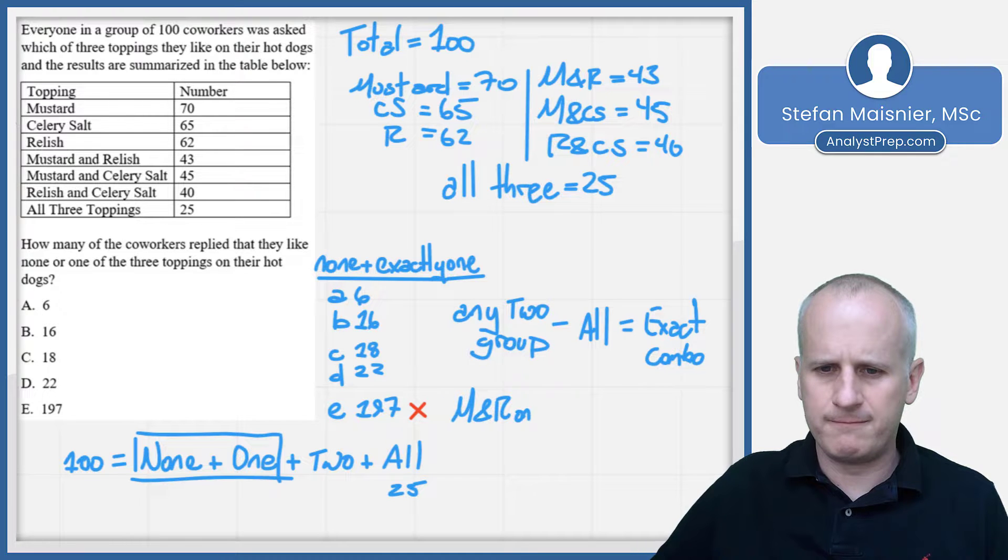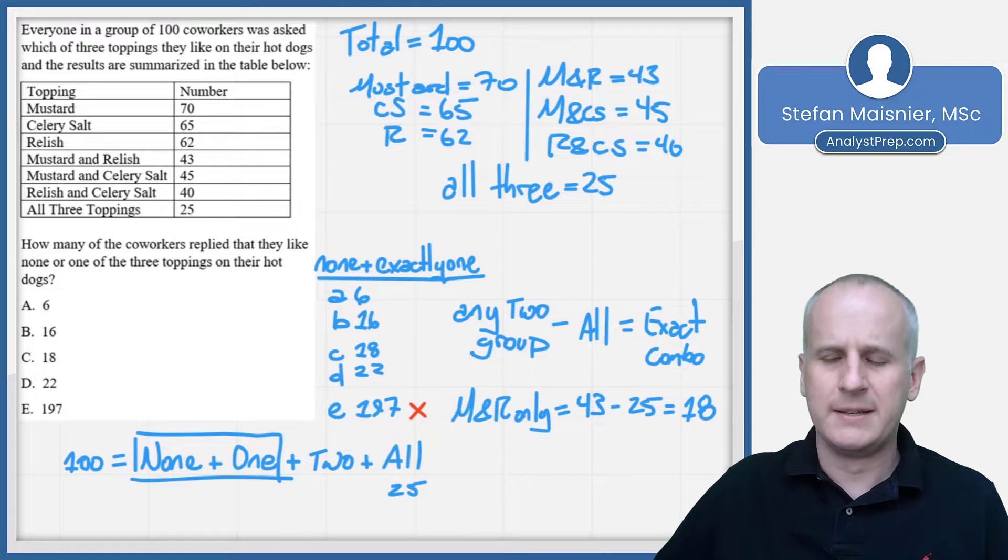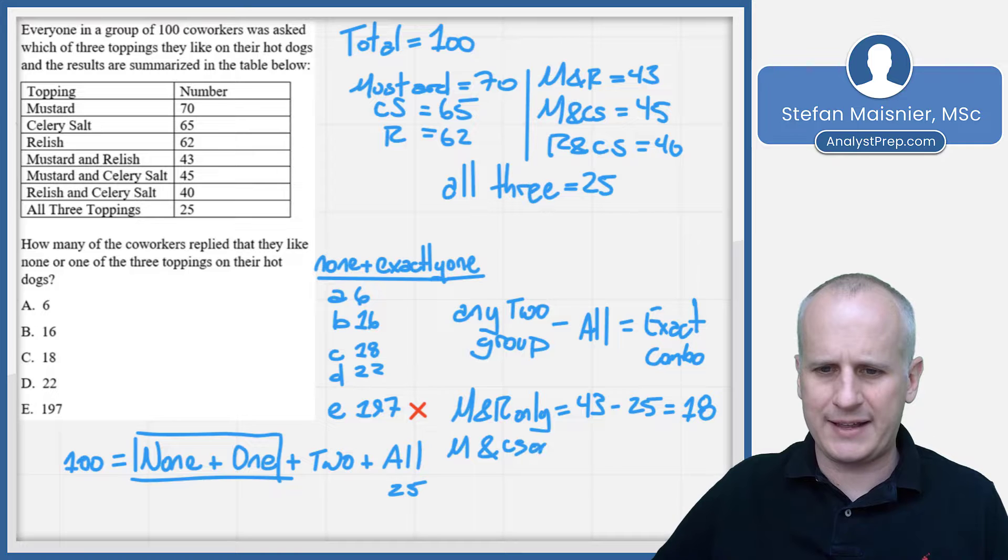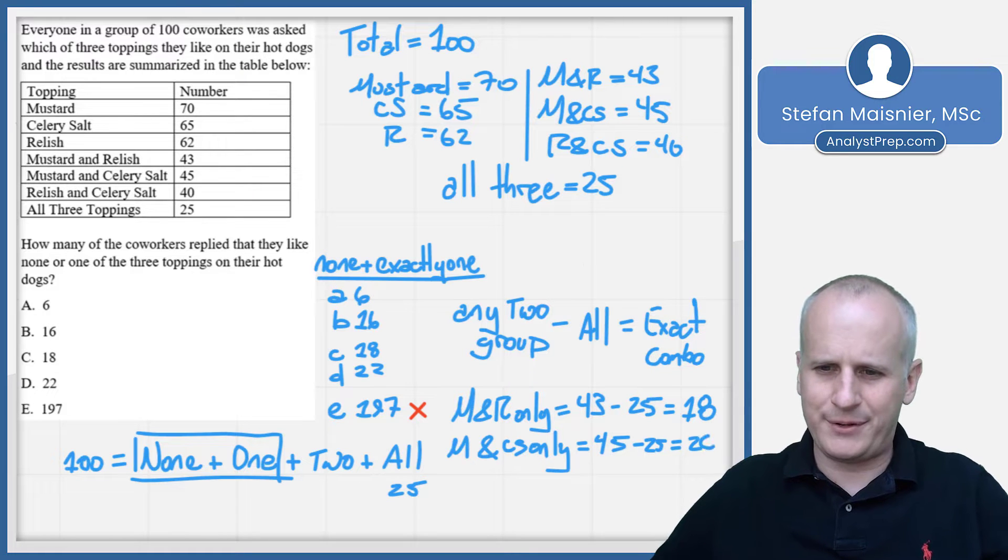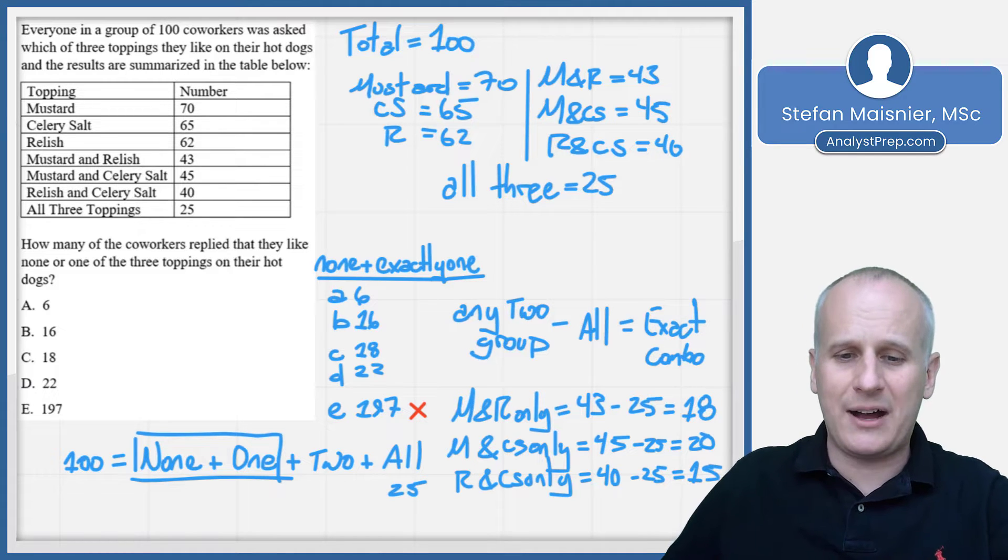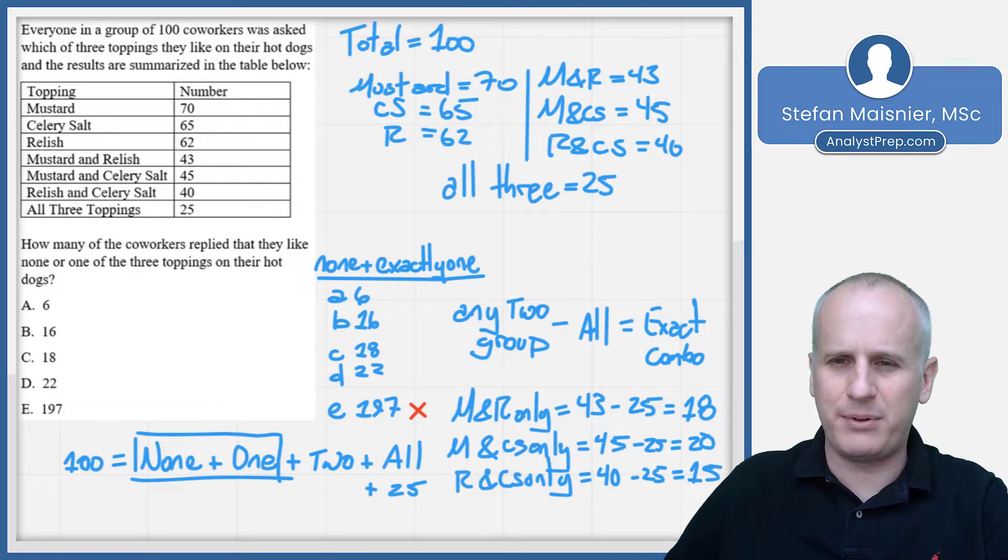So that means when we're looking at M and R, we can do M and R only as being equal to 43 minus 25, which is equal to 18. Because we know that if you like M and R, you could have some that like all three. And so that's our M and R only. Then we've got our M and celery salt only, that exact combination. That's equal to 45 minus 25, which is 20. And then we've got our R and CS only. That's equal to our 40 minus that same 25 that were all three for a total of 15. So now we know that the exactly two is 18 plus 20, which is 38. 38 plus 10 is 48. 48 plus 5 will give me 53 for exactly two.